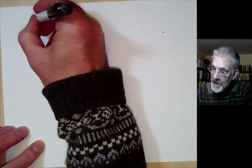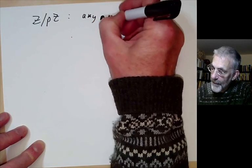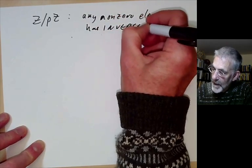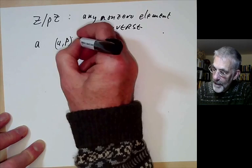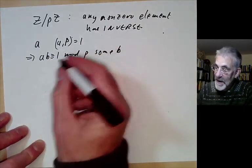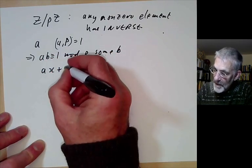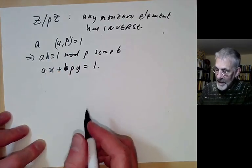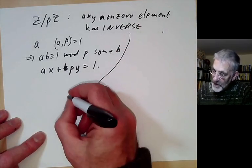The integers mod p are rather special: any non-zero element has an inverse. If a is coprime to p (since p is prime), then ax ≡ 1 mod p for some x, because we can solve ax + py = 1 using Euclid's algorithm, and x is the inverse of a. Rings in which every non-zero element has an inverse are called fields.